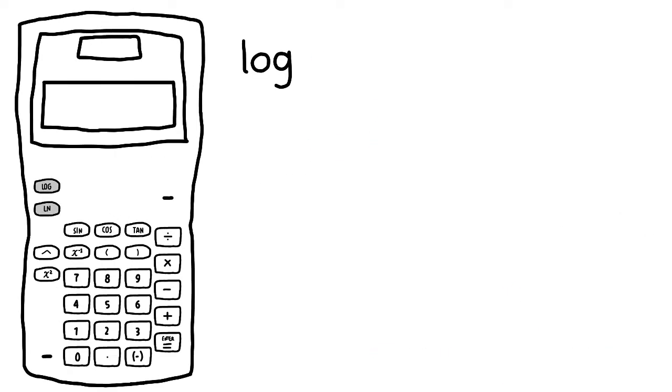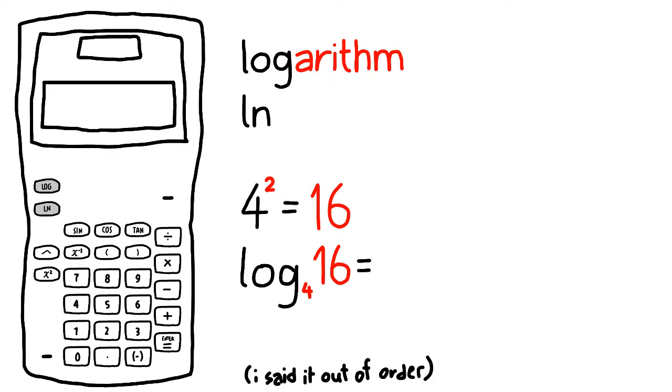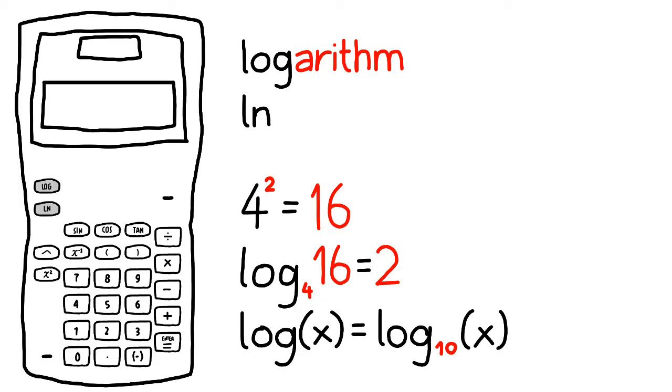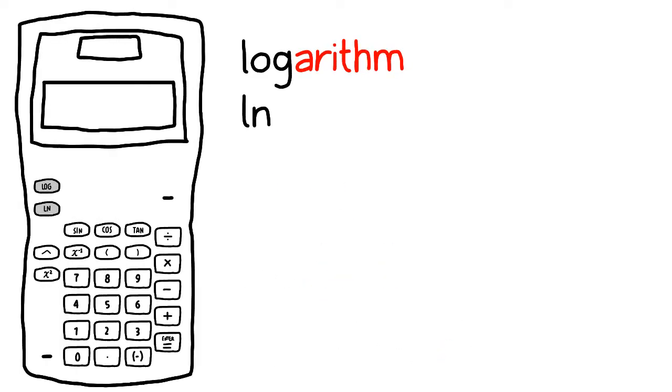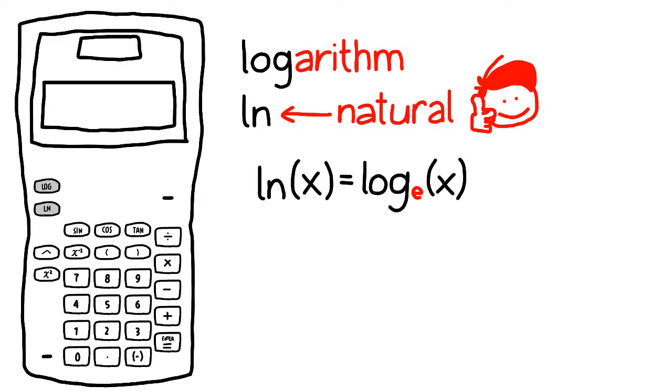Then we have these two, log and ln. Log is short for logarithm, which is the opposite of an exponent, like how division is to multiplication. If 4 squared is 16, then log base 2 of 16 is 4. If you don't see a base, assume the base is 10. ln is the natural logarithm, which means ln of x is actually log base e of x, and e is a number equivalent to this.